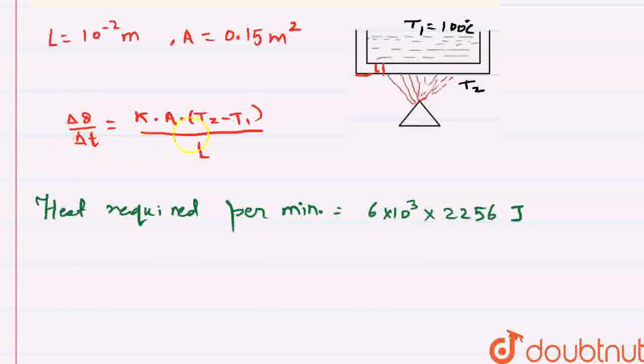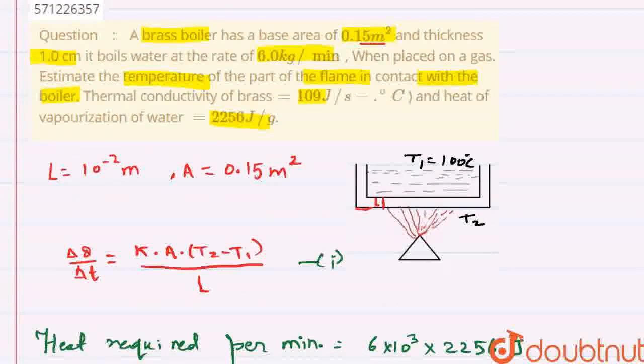And we know from this equation, from equation first, we can derive the equation for delta Q. Now first, we'll have delta Q equal to K A into T2 minus 100.